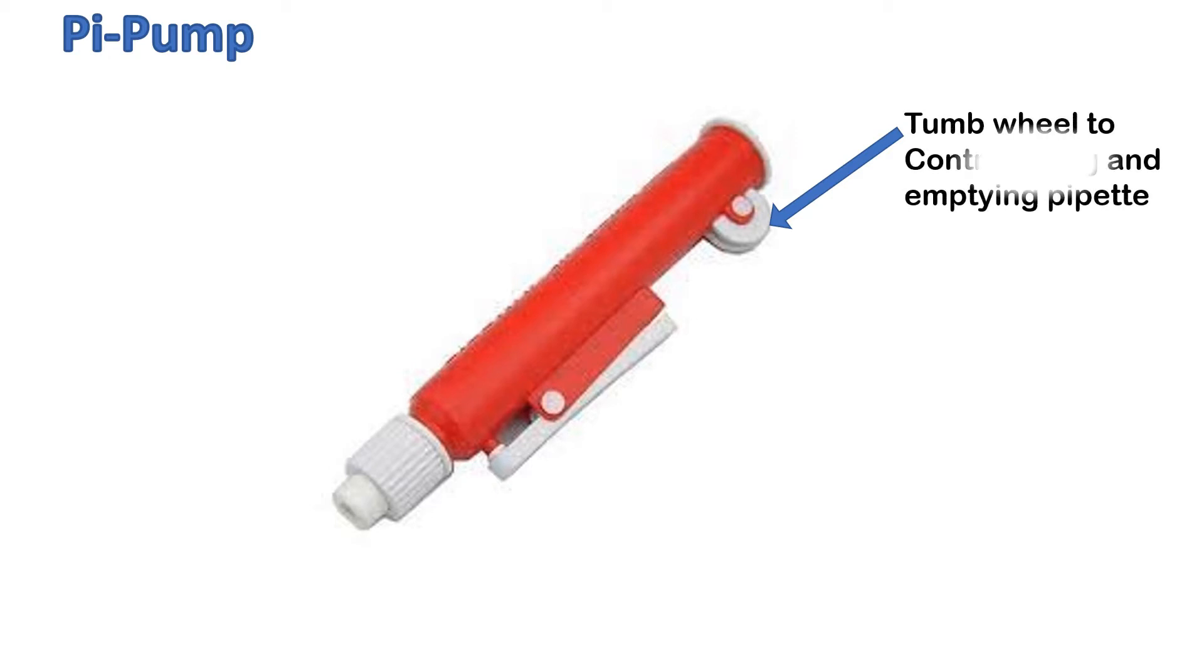There are two parts in a pipette filler: thumb wheel and lever. The thumb wheel is used to control the pipette filler when filling and emptying the pipette. The lever is used to dispense liquid rapidly from the pipette.